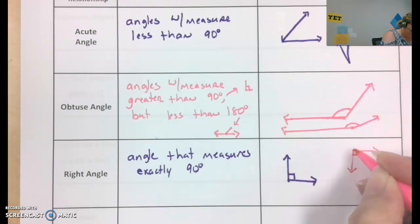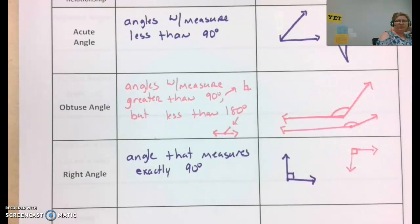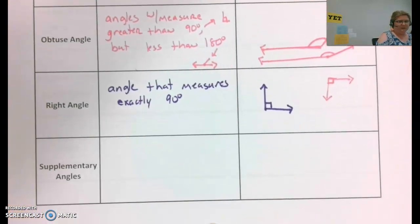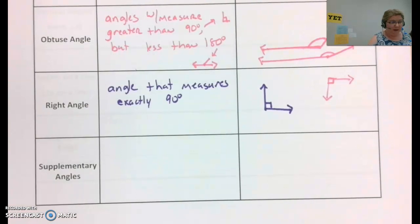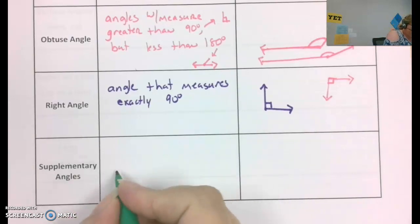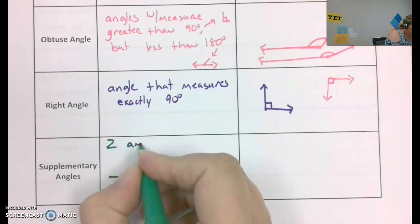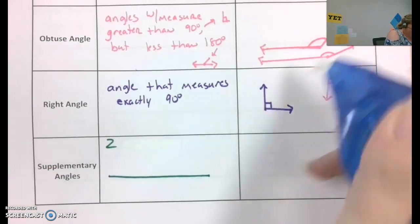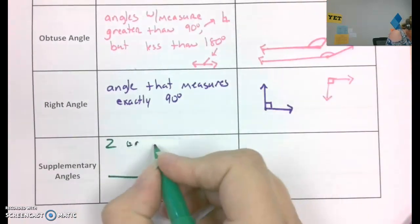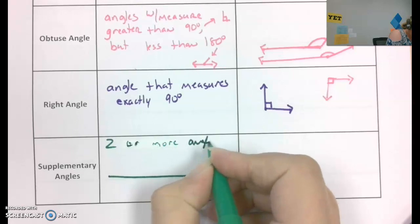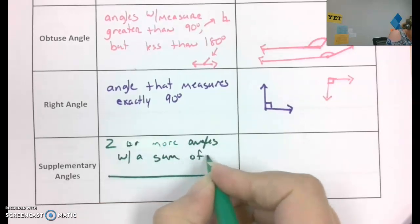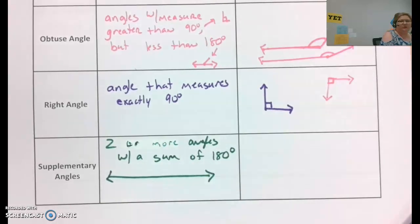This little indication right here is often used to show a right angle. Then we have supplementary angles. This is actually our first angle relationship that we'll be using. Supplementary angles are angles that have a sum of 180. So it's two angles. When you add their measures together, they equal 180. Two or more. Two or more angles with a sum of 180 degrees. So here's a straight line, which is 180 degrees.